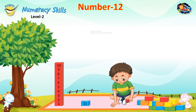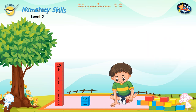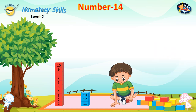Number 12: Tom has 11 cubes, he places one more to make 12 cubes. Number 13: Tom has 12 cubes, he places one more to make 13 cubes. Number 14: Tom has 13 cubes, he places one more to make 14 cubes.